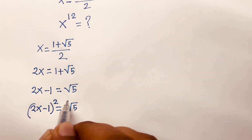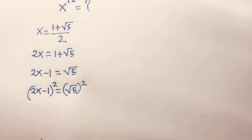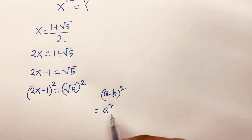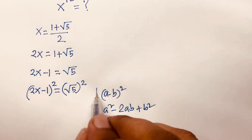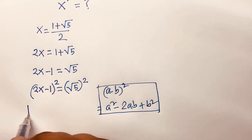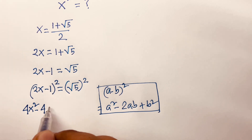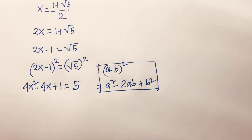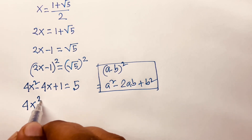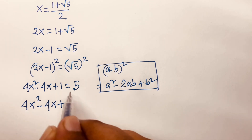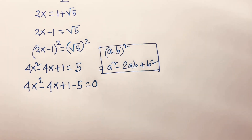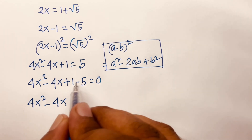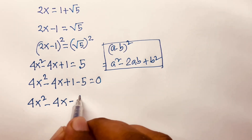I just use both sides squared. Then using the (a minus b) whole square formula: a squared minus 2ab plus b squared. According to this rule, I can say 4x squared minus 4x plus 1 is equal to 5, since the square root cancels.